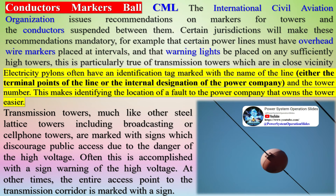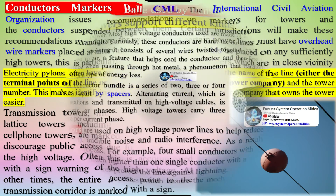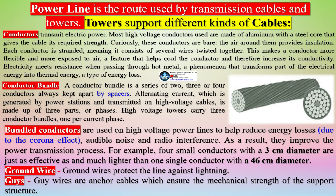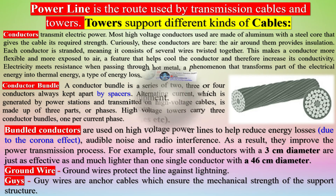The International Civil Aviation Organization issues recommendations on markers for towers and the conductors suspended between them. Certain jurisdictions make these recommendations mandatory — for example, requiring overhead wire markers placed at intervals, and warning lights on sufficiently high towers, particularly those in close vicinity to airports. Transmission towers, like other steel lattice towers, are also marked with signs discouraging public access due to the danger of high voltage, either on the tower itself or at the entrance to the transmission corridor.